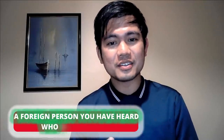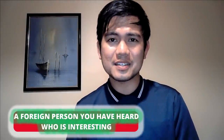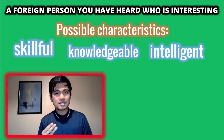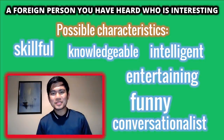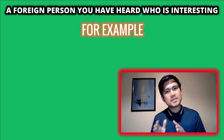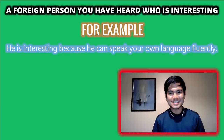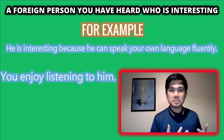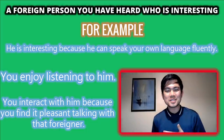Let's continue to the next cue card — a foreign person who is interesting. Consider his characteristics: why do we say he is interesting? Maybe because he is skillful, knowledgeable, intelligent, entertaining, funny, or a great conversationalist. For example, this foreign person could be interesting because he can speak your native language. We easily get amazed when a foreigner speaks our own language — we're surprised and love to communicate with that person. Try to compose a monologue out of that idea.